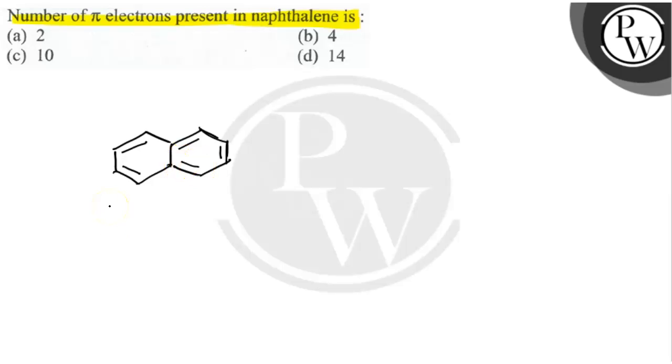So in naphthalene we can see the number of pi electrons are proven to be 10. We can see from the structure that naphthalene has five carbon-carbon double bonds. So five carbon-carbon double bonds.